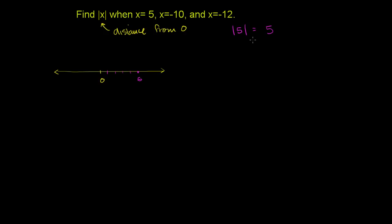Now, and I think you already get to see, this is a pretty straightforward concept. Now let's do something a little more interesting. Absolute value of negative 10, or the absolute value of x when x is equal to negative 10. So let's just put negative 10 in for x. This is the distance that negative 10 is from 0.